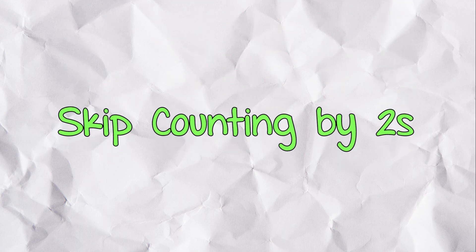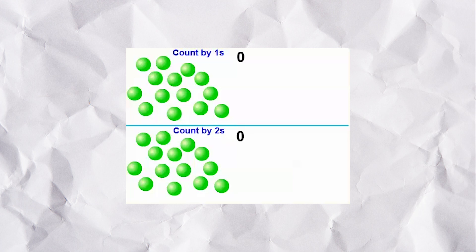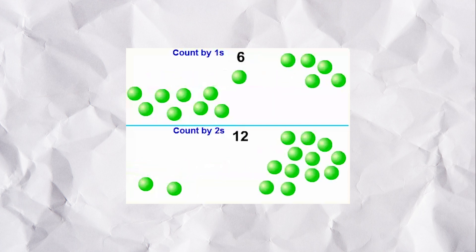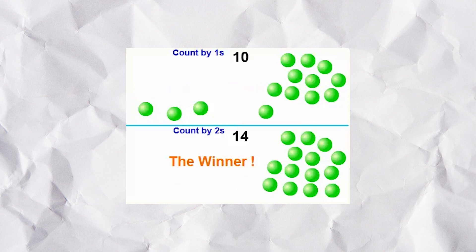Learning to skip count by 2 means you can count things faster. In this example, who will be the winner? Skip counting by 2 is the winner. Normal counting is so slow.